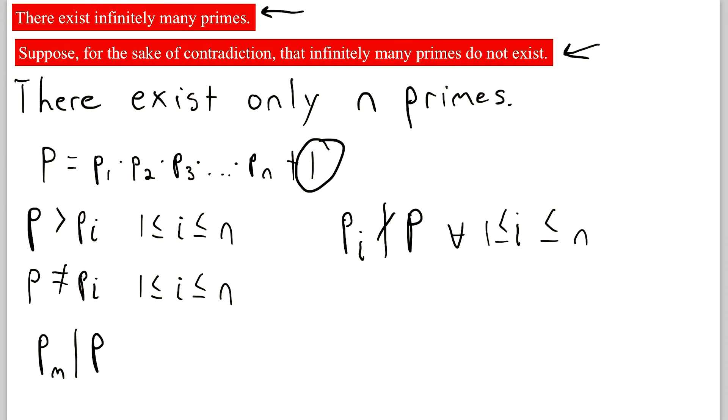And now that's our contradiction, because remember, we said previously that some prime does divide P. So there existed some m in this range so that Pm divides P. We showed that one of these prime numbers has to divide P, and we also showed that that's clearly not possible, because there's always going to be this remainder of 1.